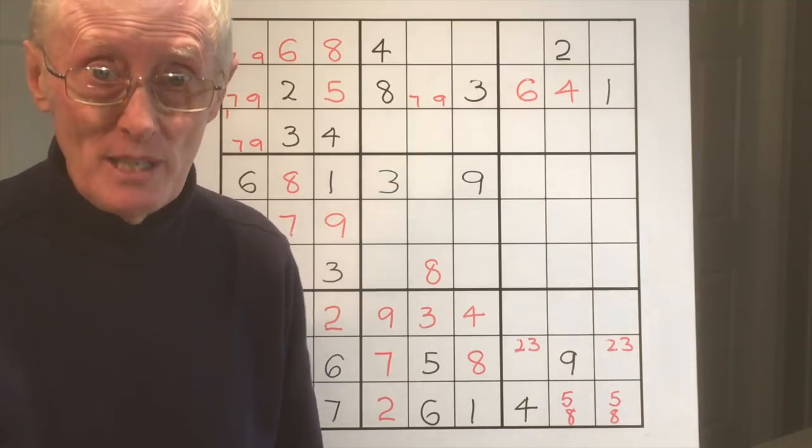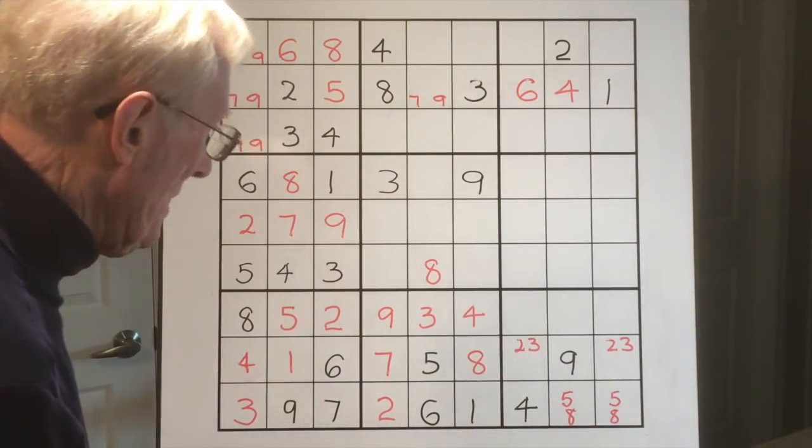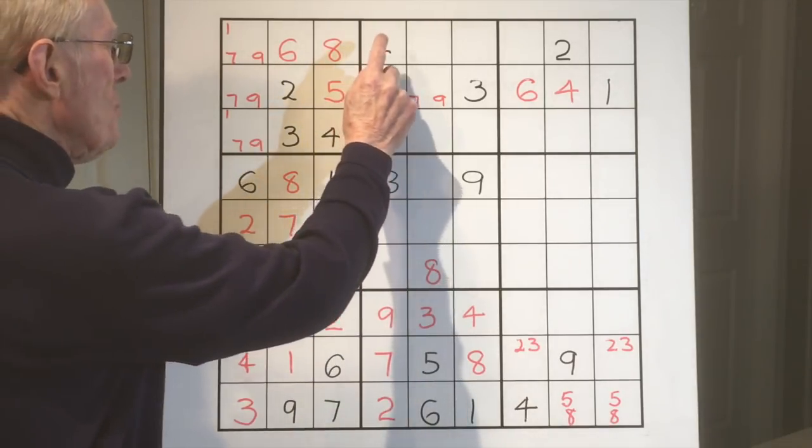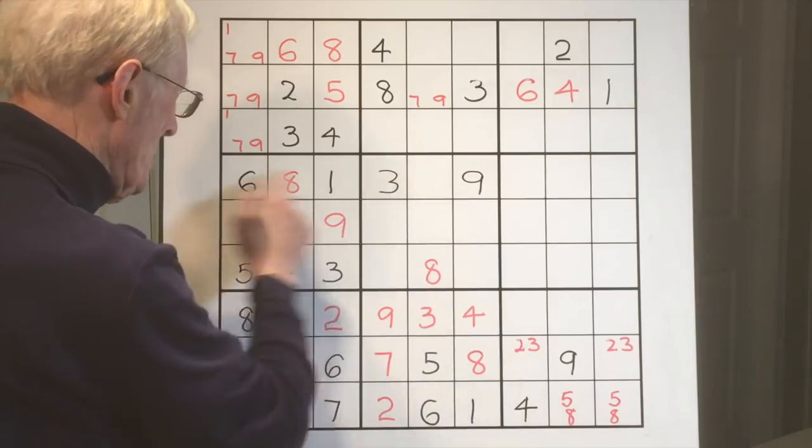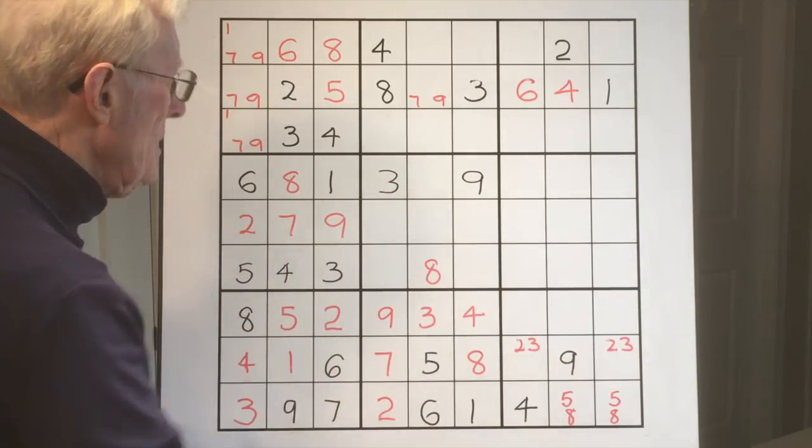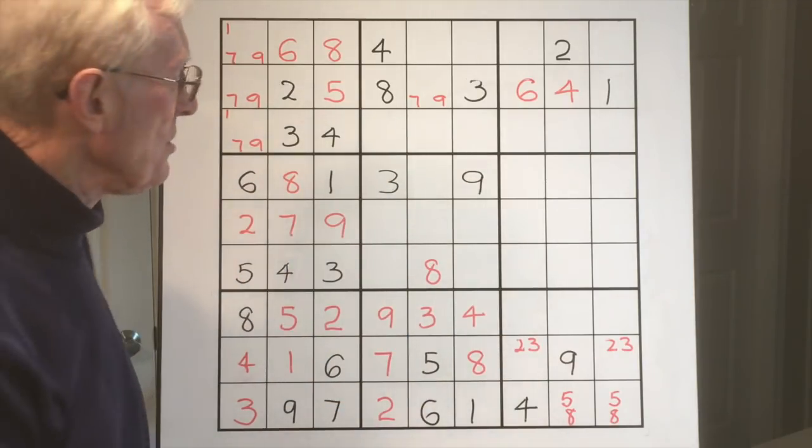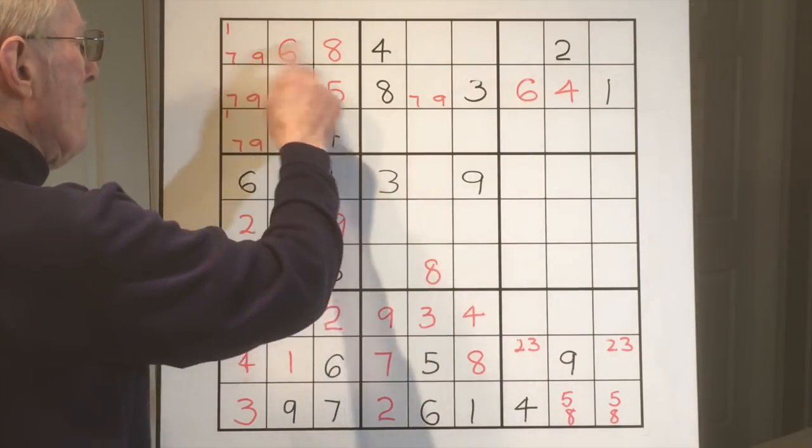So here we go. Here is a very difficult puzzle. The original puzzle was the black numbers - these were the originals. And then we started to solve the puzzle, and as we solved the puzzle we got some of these numbers for sure.